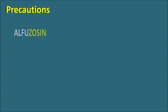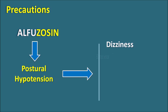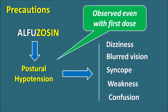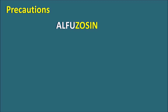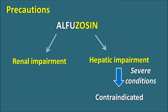What are the precautions? An important precaution is that Alfuzosin blocks alpha-1 receptors and can produce postural hypotension. When this drug is given, it can produce symptoms such as dizziness, blurred vision, syncope, fainting sensation, weakness, and confusion. These symptoms should be carefully monitored. Interestingly, these symptoms can be observed even with the first dose — they are therefore called first-dose effects — and patients should be warned accordingly. Another important precaution: Alfuzosin can produce renal impairment, so it should be used carefully in renally impaired patients. It can also produce hepatic impairment on long-term therapy, and in patients with severe hepatic impairment, this drug is strictly contraindicated.